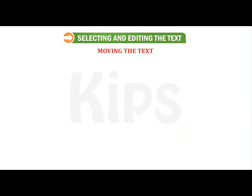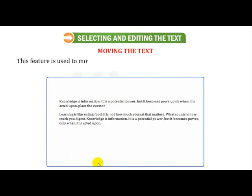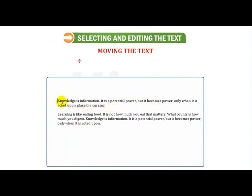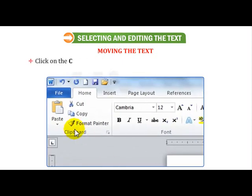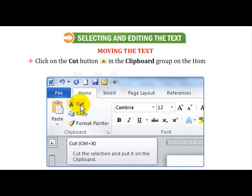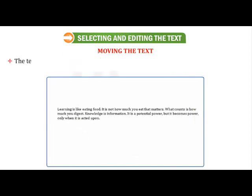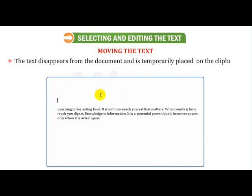Now let us learn how to move the text. This feature is used to move the text from its original location to a new location. Select the text you want to move. Click on the Cut button in the Clipboard group on the Home tab, or press Ctrl+X. The text disappears from the document and is temporarily placed on the clipboard.